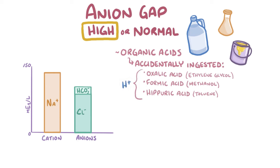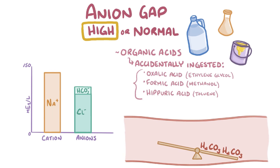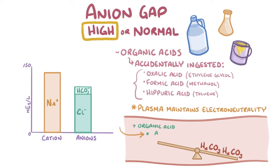All of these organic acids have protons, and at a physiologic pH they dissociate into protons and the corresponding organic acid anions. The released protons attach to bicarbonate ions floating around, which decreases the bicarbonate plasma concentration and shifts the pH towards the acidic range. The plasma maintains its electroneutrality because for each new negatively charged organic acid anion, there's one less bicarbonate ion. Because the organic acid anions are not part of the anion gap equation, the anion gap will be high.